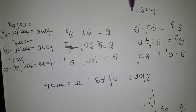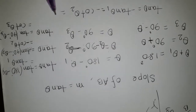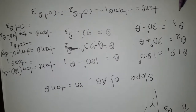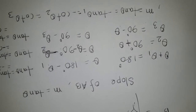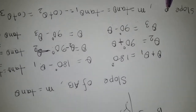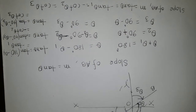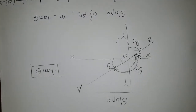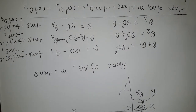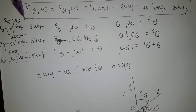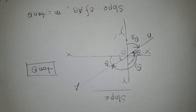Tan theta equals negative tan theta 1, equals negative cot theta 2, equals cot theta 3. This is M, and you can write this as the slope of AB. This is the overall concept and the perfect formula for getting the slope of straight line AB. Thank you for watching this video. Please like and subscribe for more videos. Stay tuned.